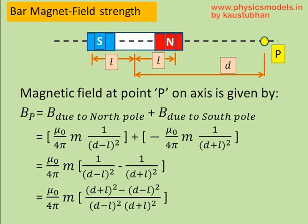Getting into the derivation, we see that the magnetic field at P is a balance between the magnetic field due to north pole and magnetic field due to south pole. The magnetic field at the north pole itself is μ₀/4π m × 1/(d-l)². d-l comes because the distance of point P from the north pole is d-l. The north pole is located inside the magnet.